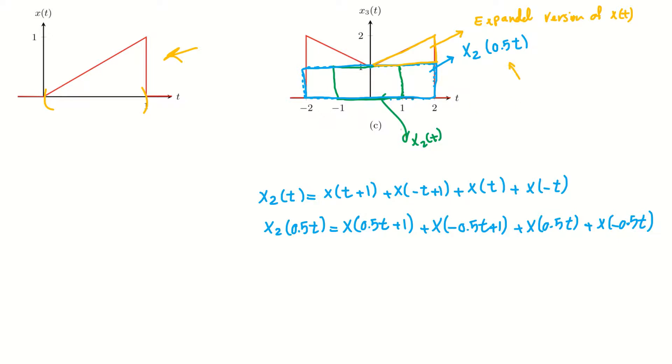And from what we discussed before, we can say this yellow part—remove those things—we can say this yellow part is actually X of 0.5t.